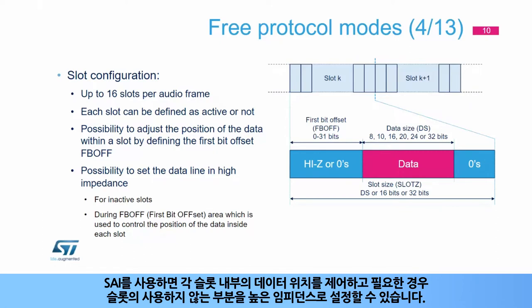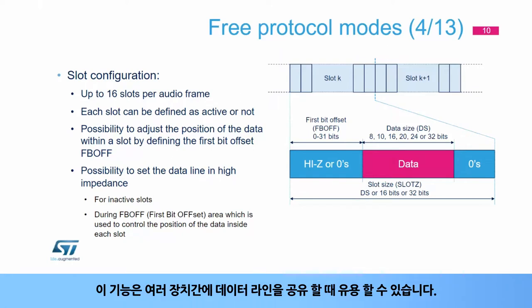The SAI allows control of the position of the data inside each slot, and to set the unused parts of the slots to high impedance if needed. This function can be helpful when the data line is shared between several devices.